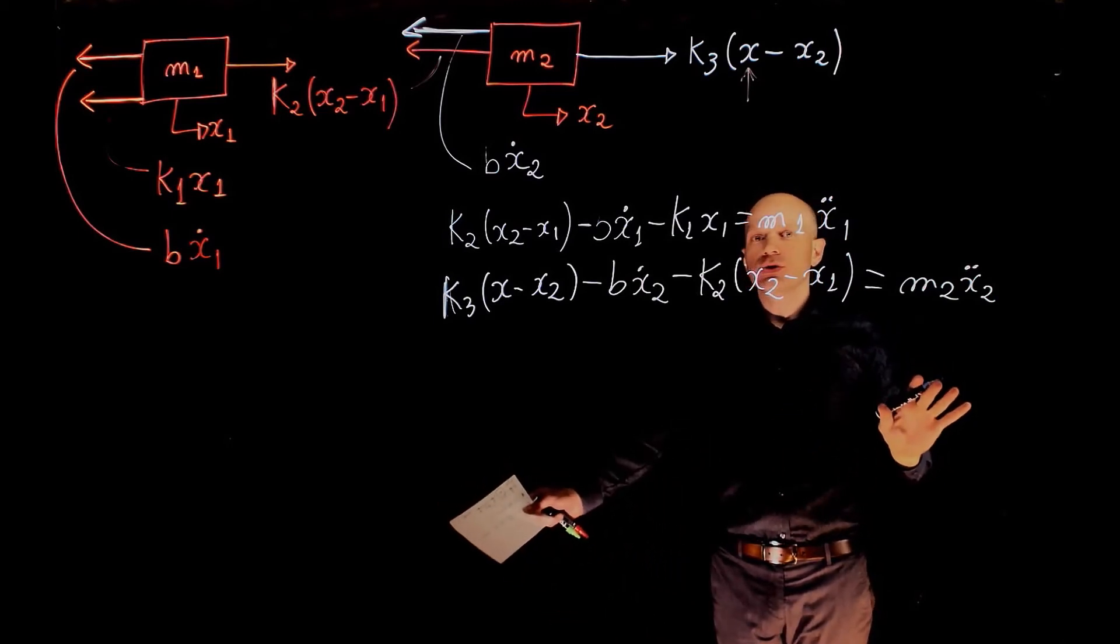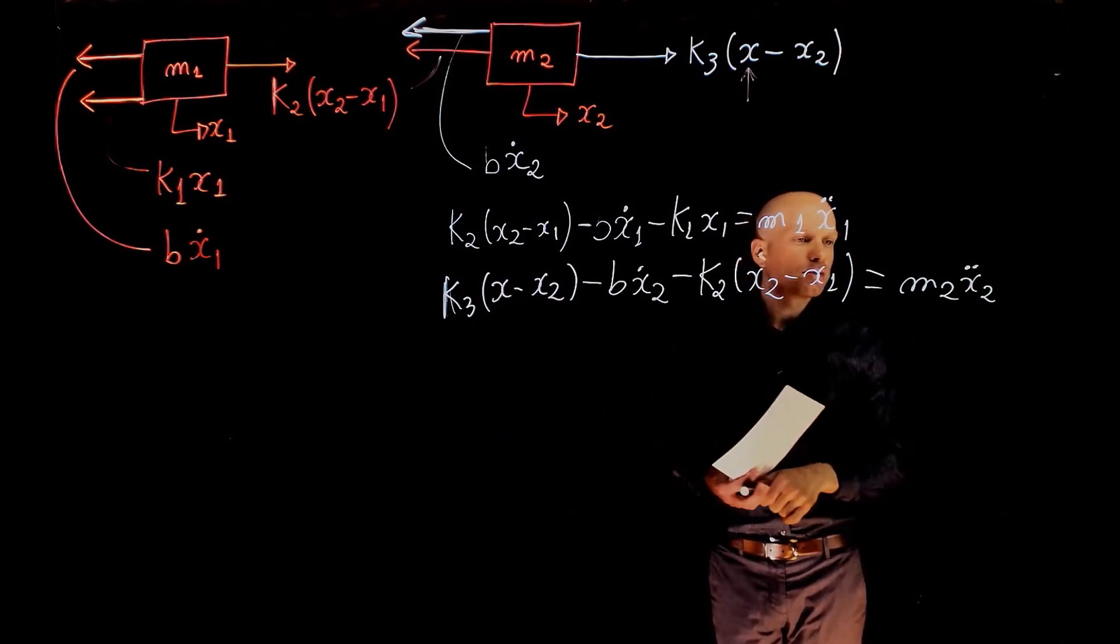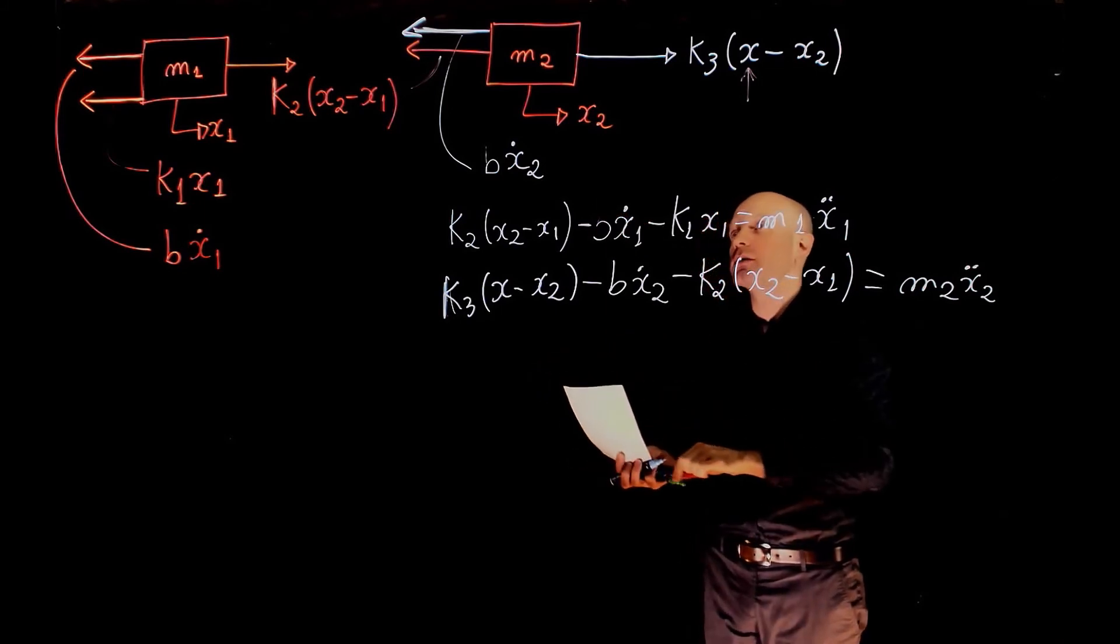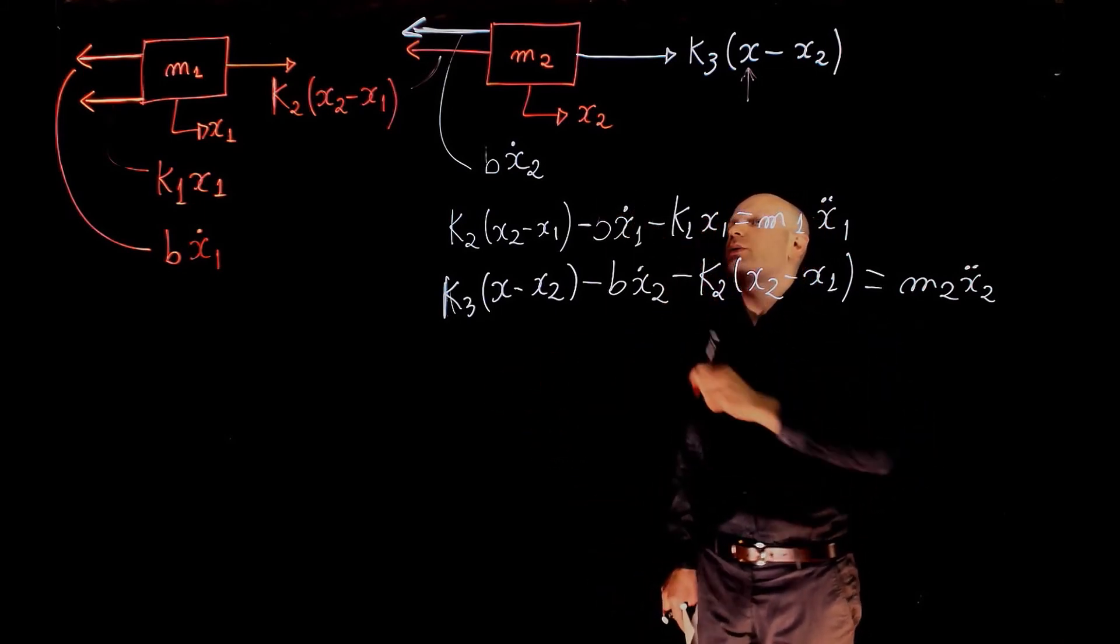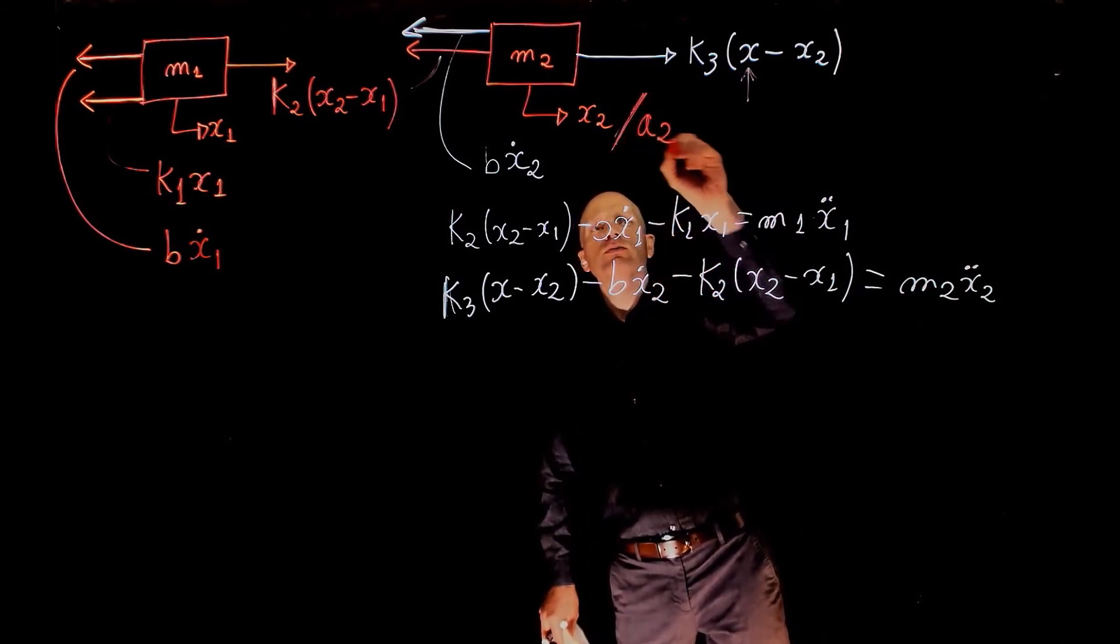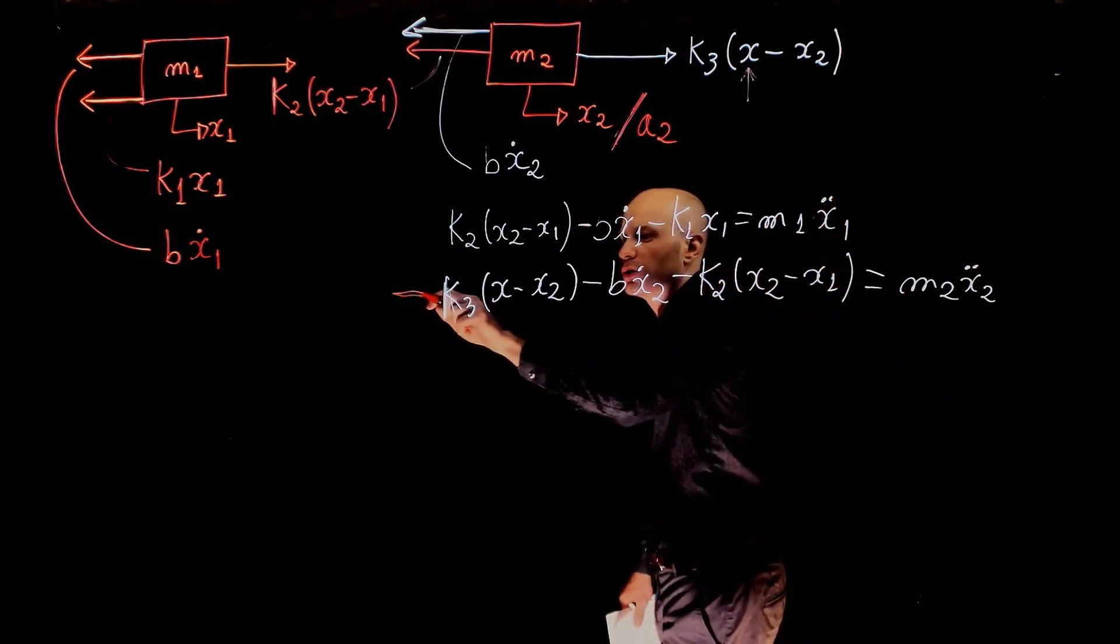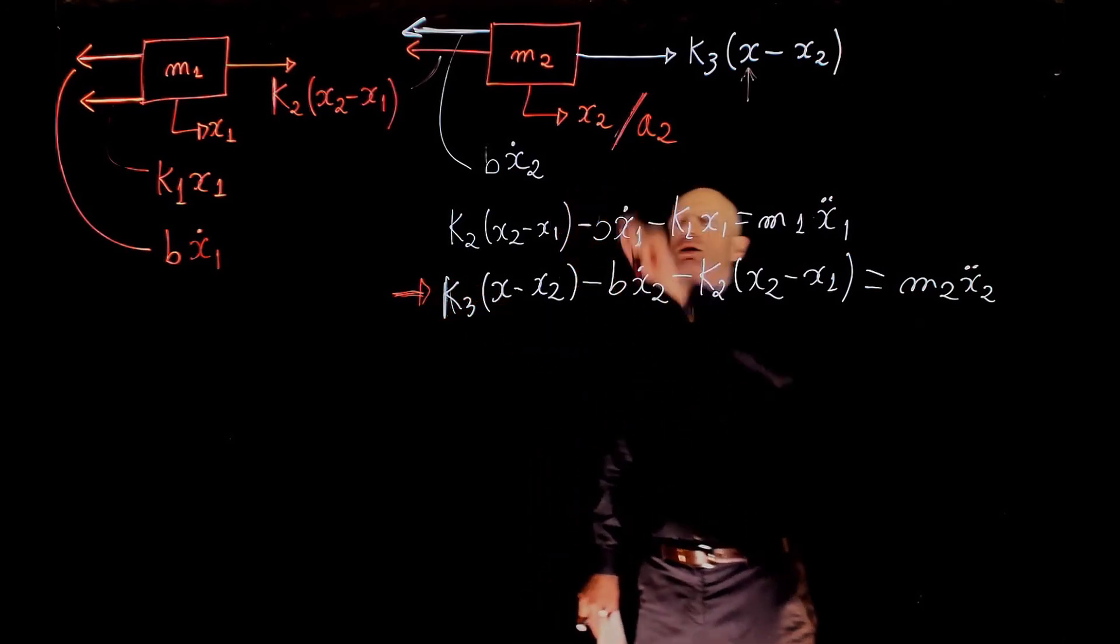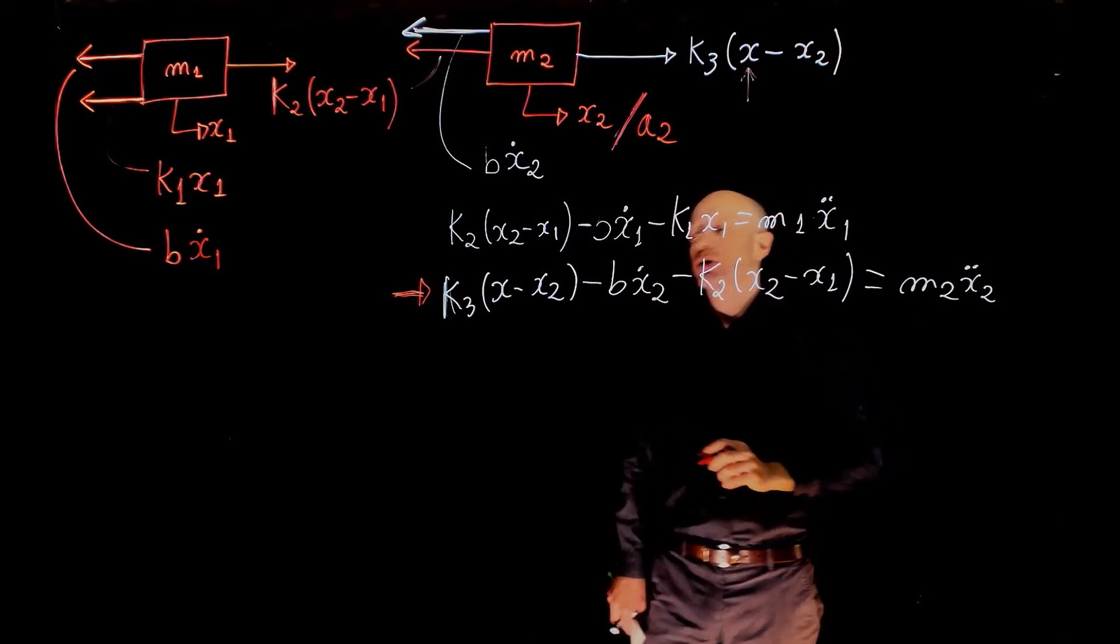These are the equations, but now we could go ahead and replace one of the variables just for fun. We can, instead of using x2 for mass m2, let's express everything as a function of the acceleration of mass m2. So that is a2. So now we have the equations, let's just do the second equation here. We want this equation as a function of the acceleration of mass m2 and the displacement of mass m1. How would that work?